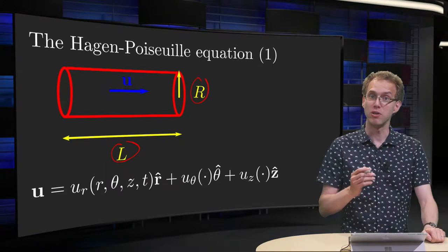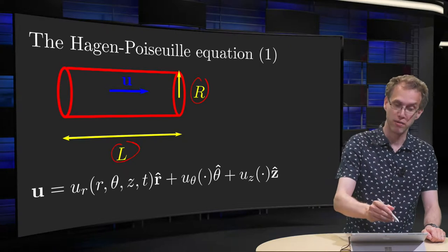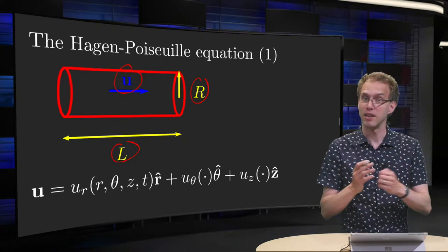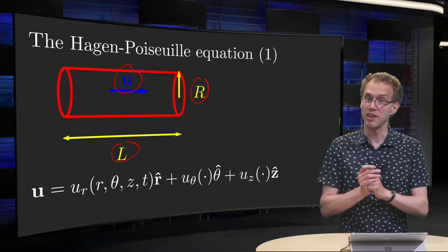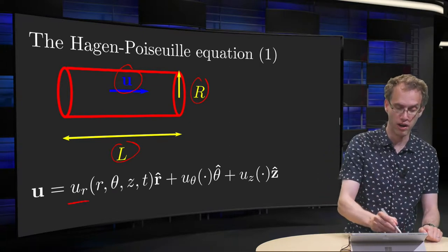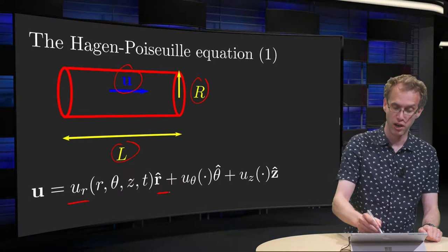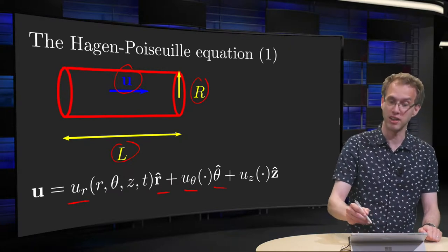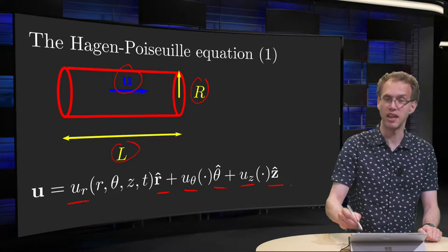We will denote the flow velocity by vector U, and then we can write U in cylindrical coordinates. We decompose U into u_r in the r-hat direction, u_theta in the theta-hat direction, and u_z in the z-direction.